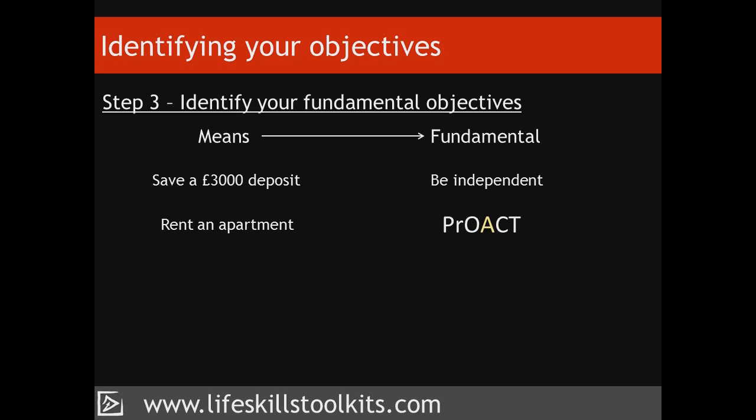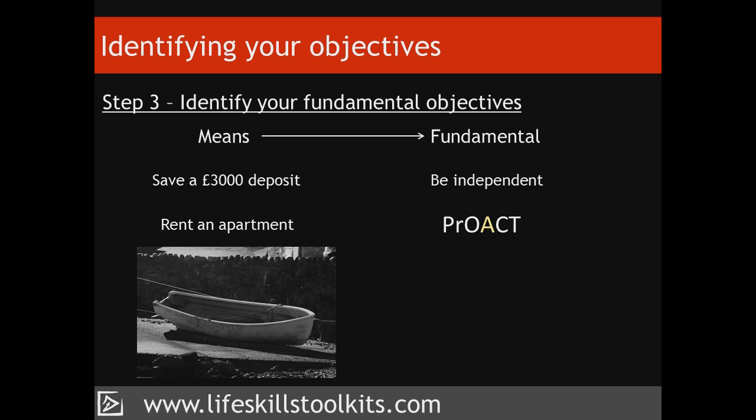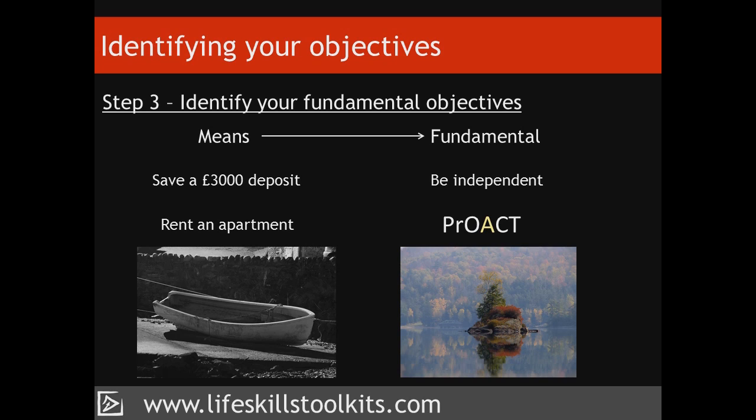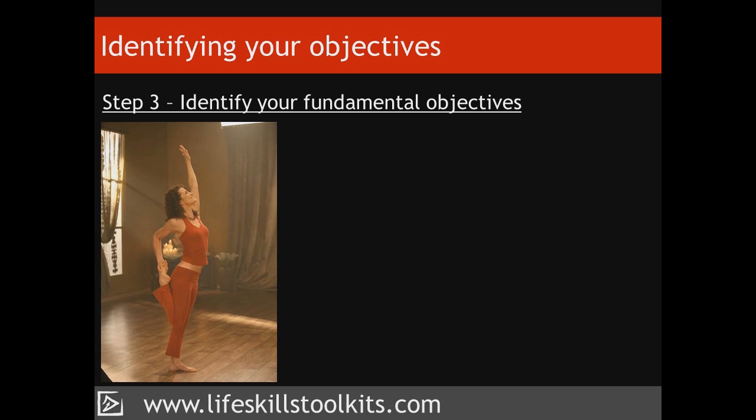The Alternatives step in the PROACT process involves identifying alternatives upon which you will base your decision, which in turn provides a solution to your decision problem. When identifying alternatives, you want to be sure that these alternatives are based on your fundamental objectives. If means objectives are the journey and the fundamental objective is the destination, you want to be sure that the alternative you decide upon is your destination.